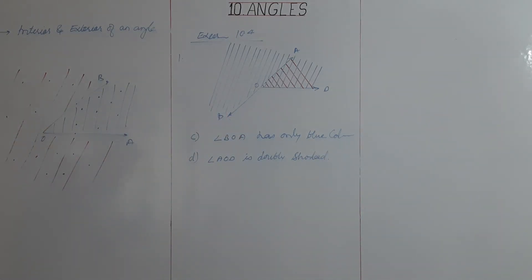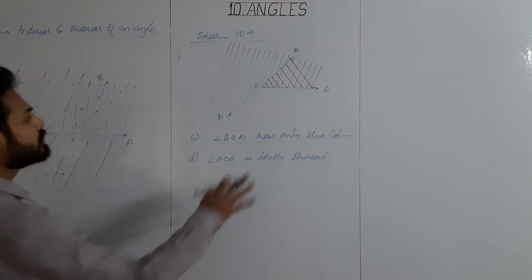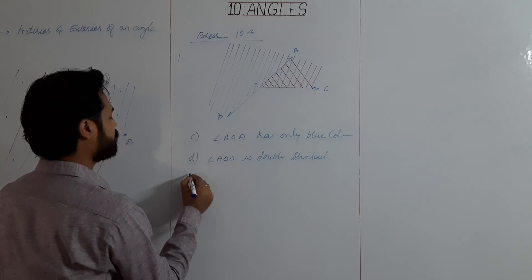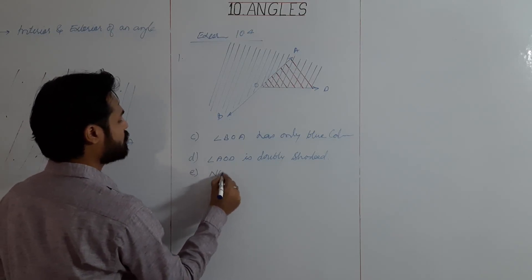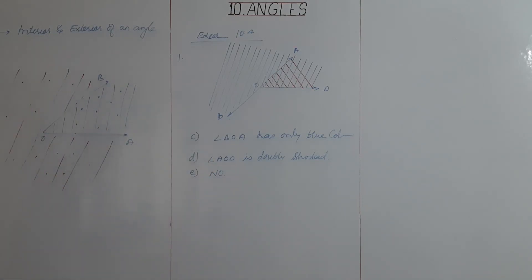Is there any portion left with only red color? No. The next question: what is the interior of a straight angle? What is the exterior of a straight angle?